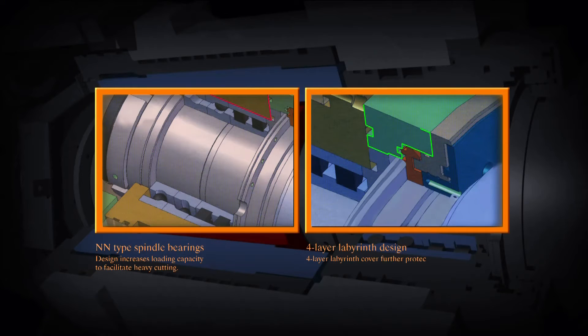NN-type bearing design increases loading capacity to facilitate heavy cutting and a four-layer labyrinth cover further protects spindle bearings.